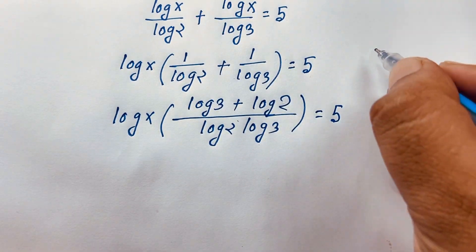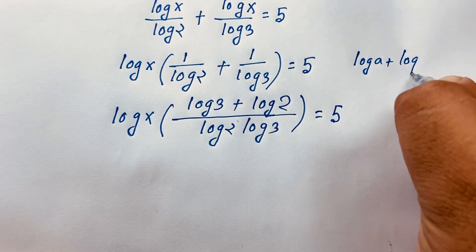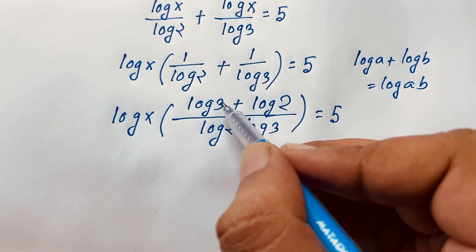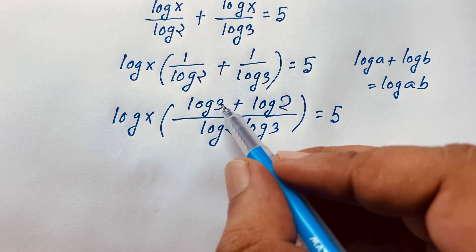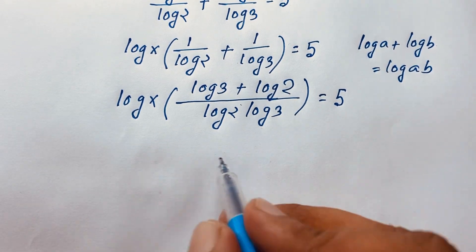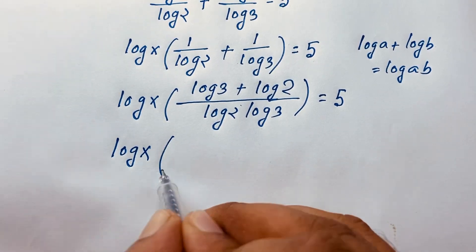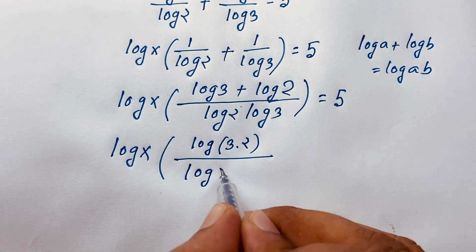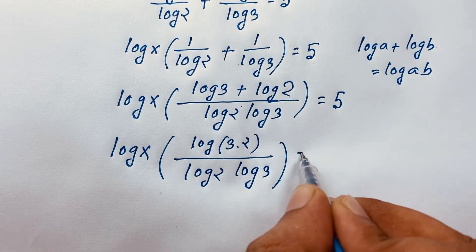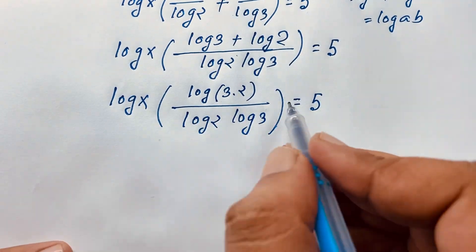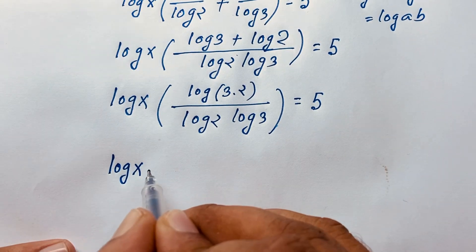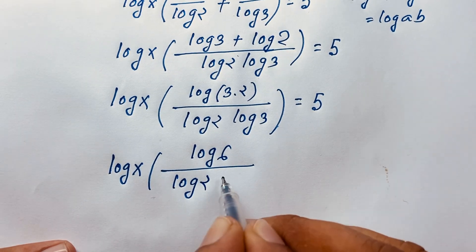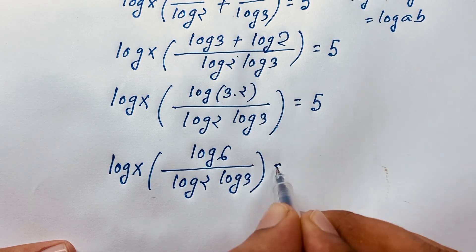We know that log a plus log b equals log ab. Here, taking a equal to 3 and b equal to 2, log 3 plus log 2 equals log 6, since 3 times 2 is 6. So the expression becomes log x times log 6 over (log 2 times log 3) is equal to 5.